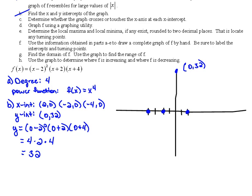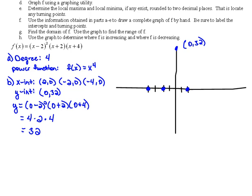Part C says determine whether the graph crosses or touches the x-axis at each x intercept. Our first intercept is (2, 0), which came from the first factor. It has a multiplicity of 2, which is even, and that tells us the graph will touch here at this x intercept. For the x intercept at (-2, 0), that came from a factor with a multiplicity of 1, which is odd, so the graph is going to cross at this x intercept. Then for the last one at (-4, 0), we again have a multiplicity of 1 — odd — so the graph will cross there. So the graph crosses at both (-2, 0) and (-4, 0), but touches at (2, 0).